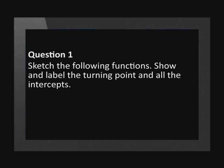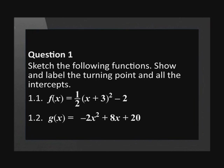Sketch the following functions. Show and label the turning point and all the intercepts. f of x equals half times, in brackets, x plus 3, all squared, minus 2. g of x equals negative 2 times x squared plus 8x plus 20.